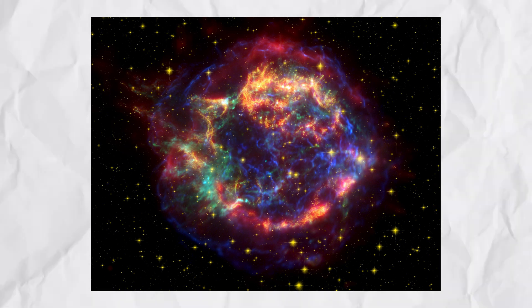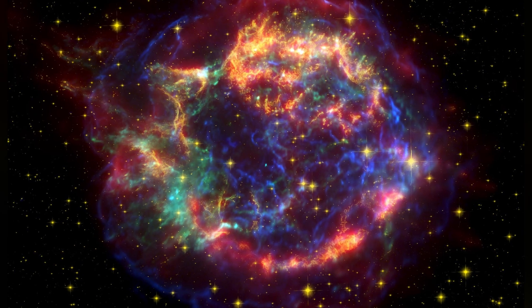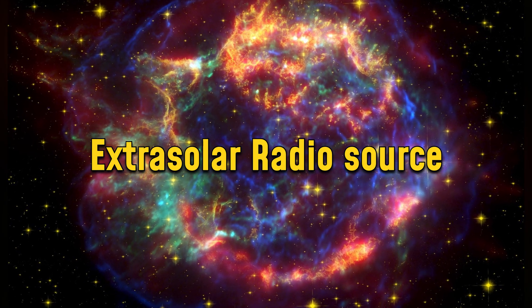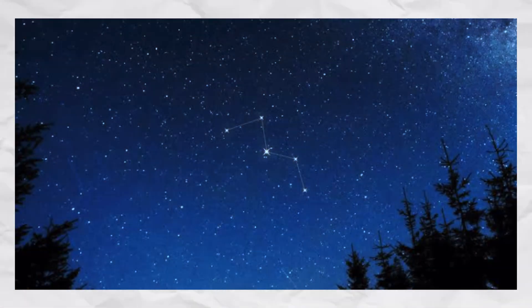Cassiopeia A. Cassiopeia A is a supernova remnant, one of the brightest extrasolar radio sources. The remnants are located in the constellation Cassiopeia.